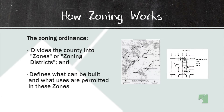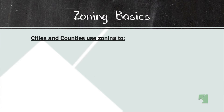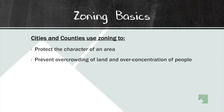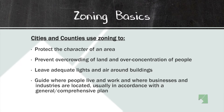The zoning ordinance defines what can be built and what uses are permitted in those zones. Cities and counties usually use zoning to protect the character of an area, prevent overcrowding of land, and leave light and air around buildings. Zoning generally guides where people live and work, where businesses and industries are located, usually in accordance with a general or comprehensive plan.